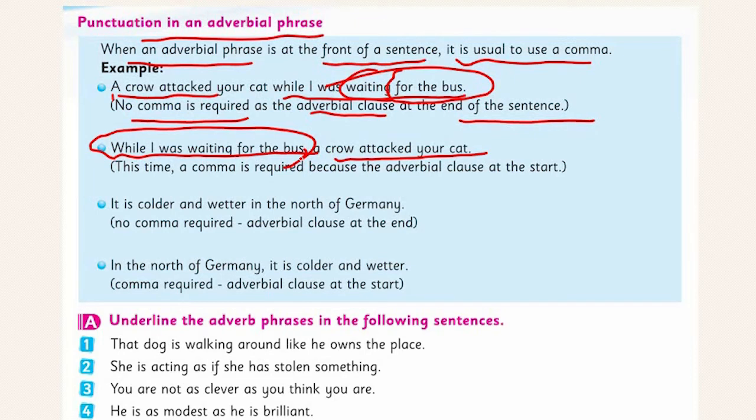Because the sentence is long, we need to use a short pause — and when we take a short pause in a sentence, we always put a comma. When we have a long sentence with a subordinating conjunction, we put a comma because it is necessary to take a pause. This comma is required because the adverbial clause is at the start.